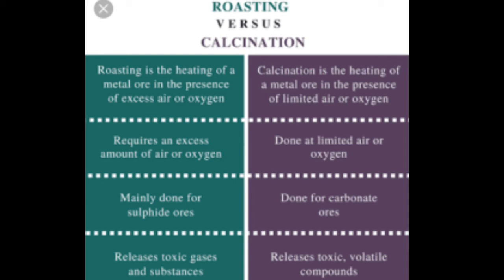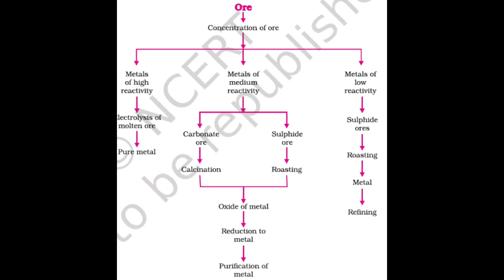तो sulfide का ore हमें roasting के process से और carbonate का ore हमें calcination के process से oxide मिल जाएगा - metal का oxide। अब metal का oxide मिलने के बाद हम reduction to metal करेंगे, उसके बाद purification और refining करेंगे।